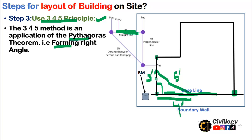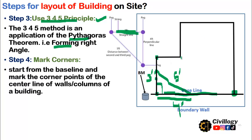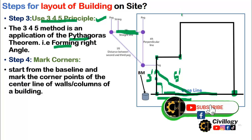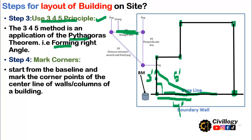Step four is to mark the corners. The three-four-five rule is applied at each corner to create a right angle. Starting from the baseline, mark the corner points of the center line of the walls and columns of the building.